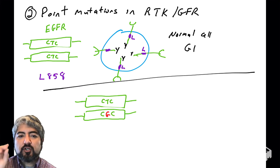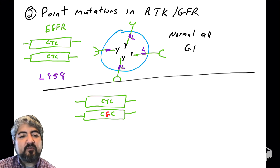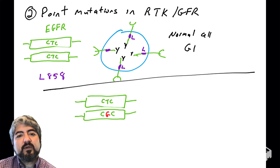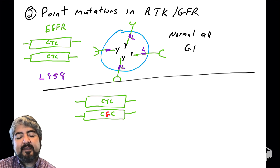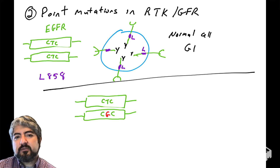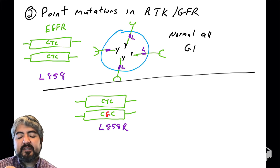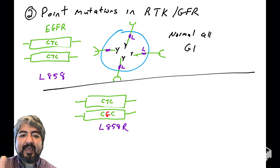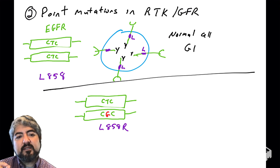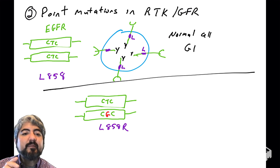There are some mutations that occur in EGFR that are point mutations. Here's an example: the T in the middle of the codon CTC is mutated to a G, making CGC. Looking at the codon table, CGC codes for arginine. So the way we write this nomenclature is L858R — the mutation leads to a leucine being replaced by an arginine.